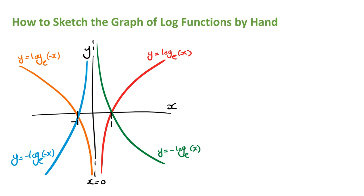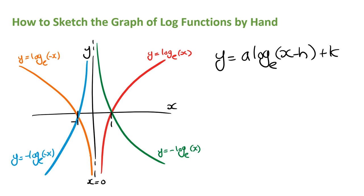A log function written in general form is written as a times log e of x minus h, plus k. The value of a will dilate the graph, the value of h will tell us where the vertical asymptote is, and the value of k will move the graph up or down. Here are the four steps you need to take when sketching log graphs — pretty much the same as the other videos. The first step is to determine its shape, by checking whether there's a negative in front of the log function and/or in front of the x.